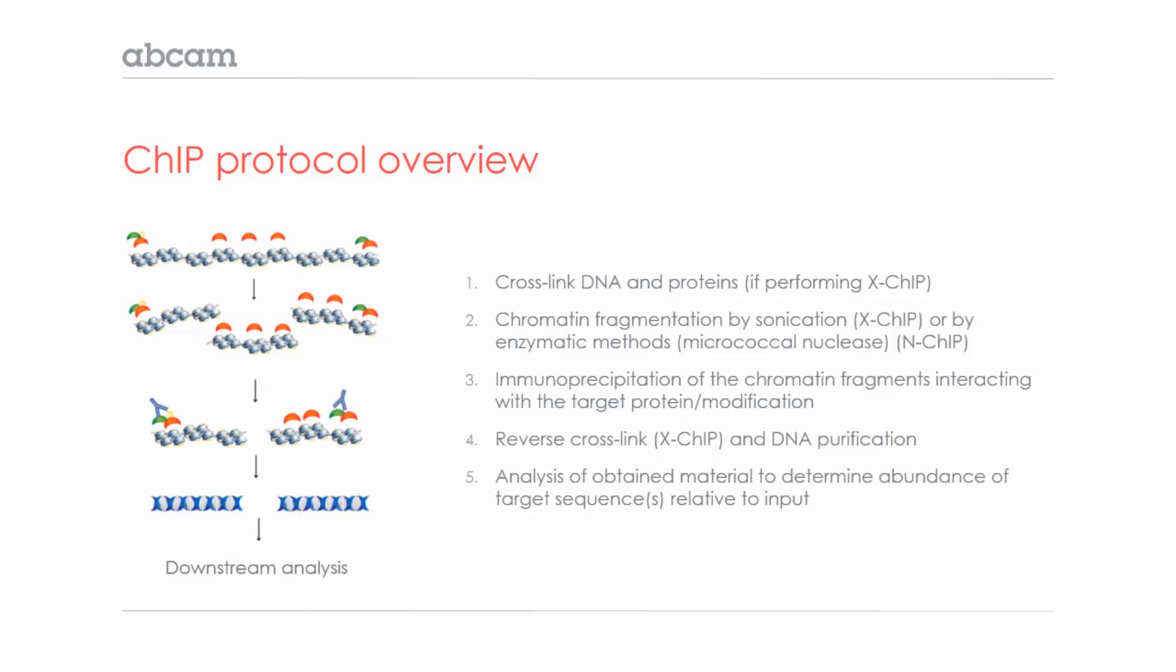In cross-linking ChIP, DNA is cross-linked to proteins, typically using formaldehyde. Cells are lysed, and the DNA is then fragmented by sonication into random fragments of 200 to 1,000 base pairs.